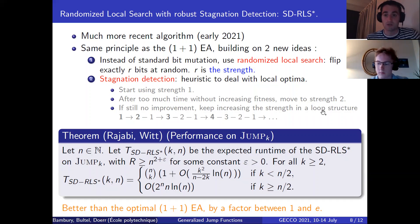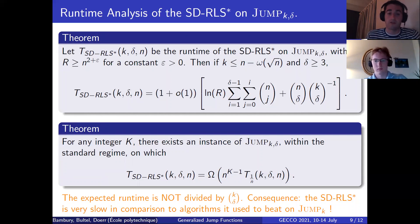And we have precise results on Jump_k, which are frankly quite impressive. So this result was obtained by Rajabi and Witt in 2021. It is a precise runtime of SD-RLS* on the Jump_k benchmark function. Obviously, the formulas may not be very enlightening, but you can remember what's in orange at the bottom of the slide. SD-RLS* is faster than the optimal (1+1) EA by a factor that is constant between one and three. This is all the more impressive that just like for fast, you do not need to know the size of the gap and you can still do better than the (1+1) EA with optimal mutation rate.